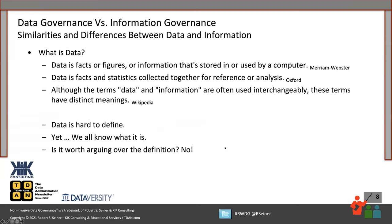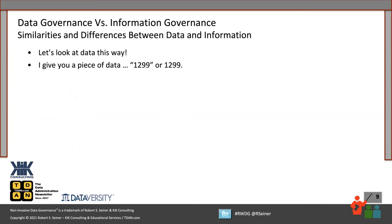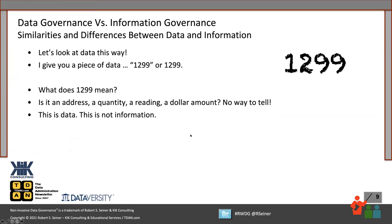We know it's that information asset. When Kevin was talking earlier about all of the information and data in all those different places, we need to govern that information if we're going to maximize the value we get from that data. So let's start out — I'm going to give you a piece of data. Here it is: the number or text 1299. Now what are you going to do with that data? You don't really know what it means. Is it an address? Is it a quantity or a dollar amount? There's really no way to tell. So this is data. This is not information.